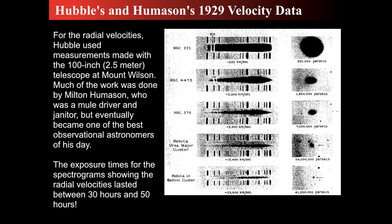Hubble followed that up by noting what Vesto Slipher had found about radial velocities, and he did additional radial velocity measurements with the 100-inch telescope at Mount Wilson. His work was with Milton Humason, who had actually been one of the mule drivers that brought the 100-inch mirror all the way up to Mount Wilson. Some of these spectra would last between 30 and 50 hours of exposure in order to collect enough light to find a spectrum.